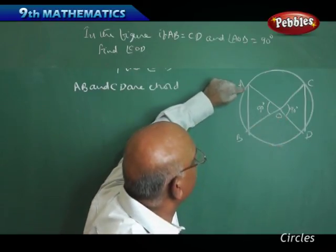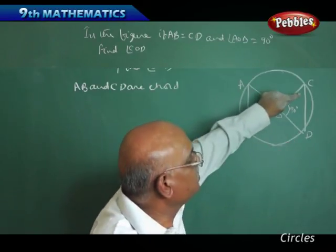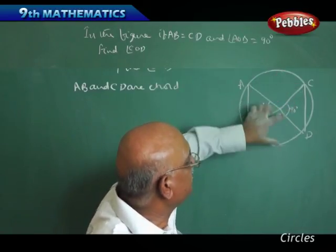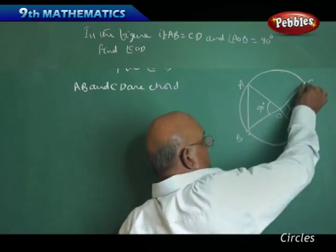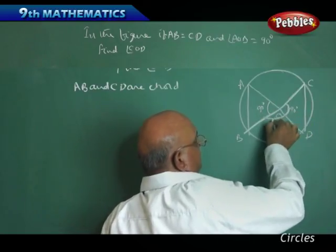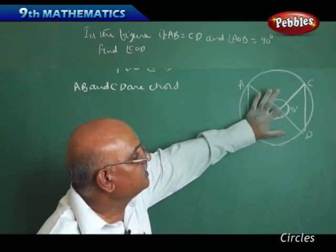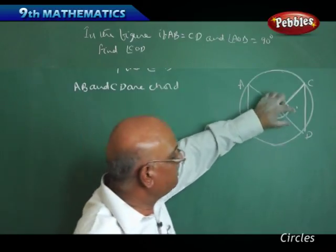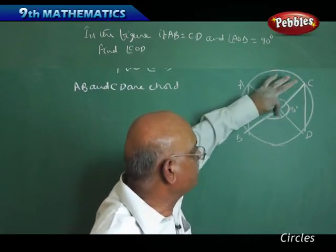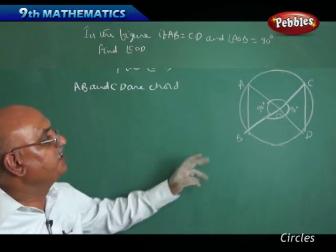Moreover, if you join lines AC as well as BD, the sum of the opposite angles is equal to 180 degrees. Whenever the sum of the opposite angles is 180 degrees, and if this angle is 90 degrees, naturally this should also be equal to 90 degrees, because it is a straight angle. If each is 90, the total is 180. The total angle makes up 360 degrees. Therefore, whatever angle chord AB makes, the same angle should be made by chord COD — triangle COD has to make the same angle at the center.